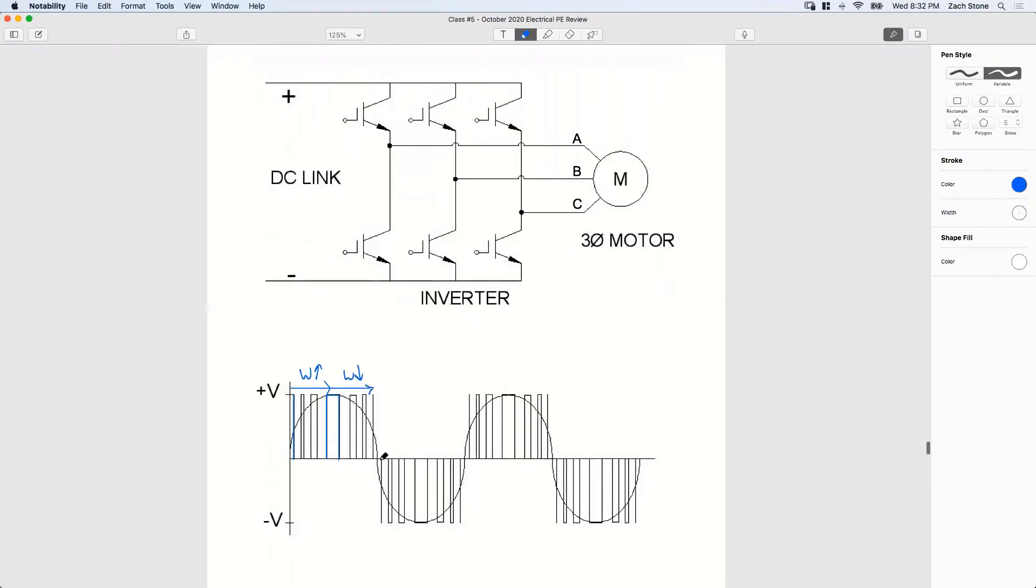Until we get to the zero, and our width is going to decrease. Same thing down here. So now we're at the zero. From the zero crossing to our peak, the widths increase of each pulse. And then as we approach back to zero again, the widths decrease.